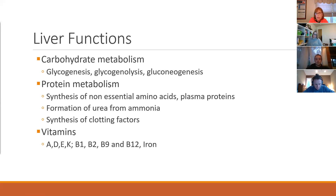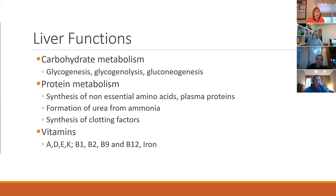Protein metabolism — your amino acids and plasma proteins come from the liver, with albumin being a big one. Albumin maintains your colloidal oncotic pressure to keep blood in the vascular space. Without a functioning liver, patients won't have albumin or transferrin, so they can't transport ferritin to link with myoglobin to make hemoglobin. The formation of urea is critical — protein breakdown in the colon by flora creates ammonia through deamination, which goes to the liver and is converted to urea so it can be excreted in urine and stool. When the liver is sick, that urea conversion gets blocked.